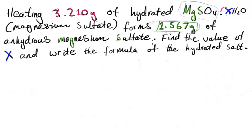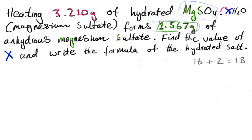The first thing I want to tackle is the moles of water. I don't know the moles or mass of water yet, but I can find the molar mass of water from the periodic table: 16 plus 2, which is 18. This gives us the MR of H2O as 18 grams per mole.